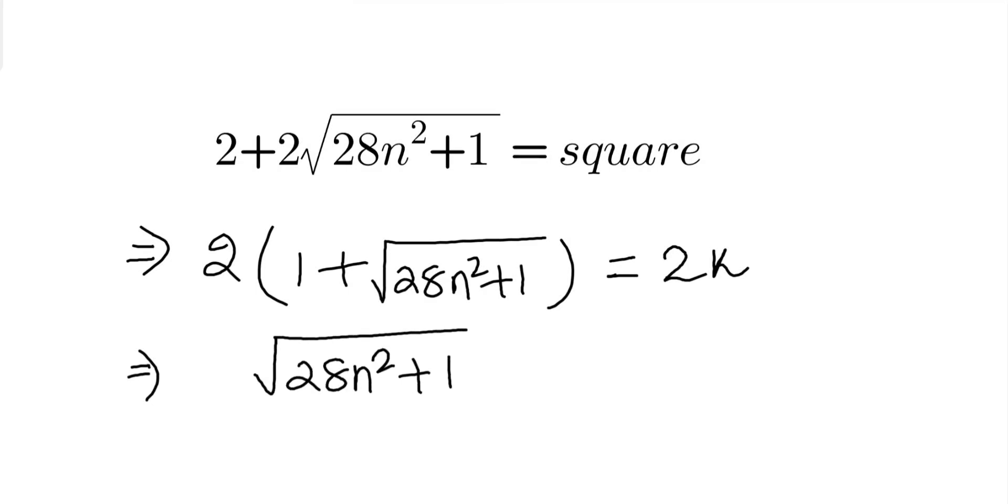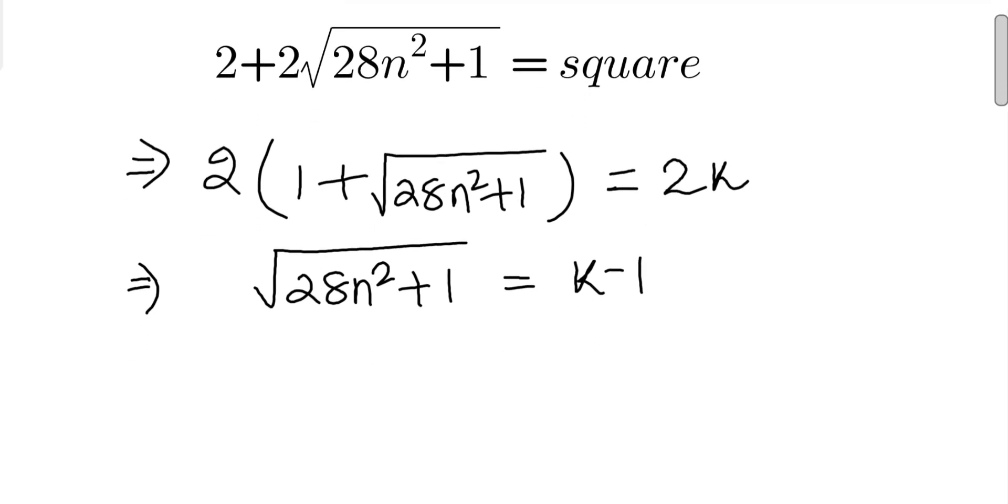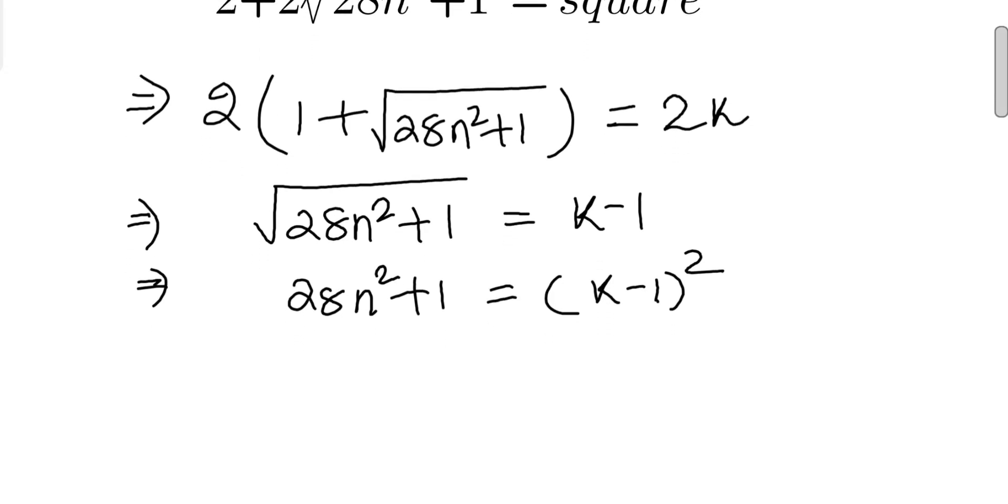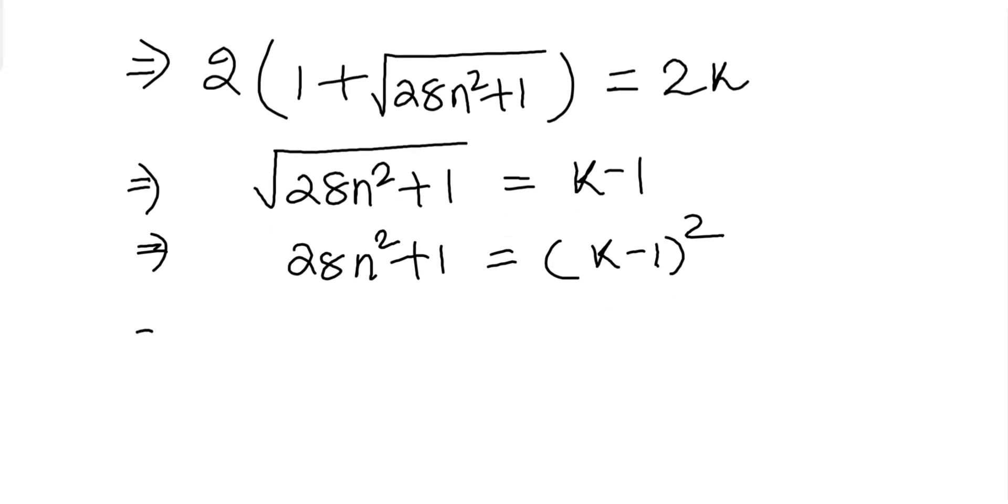√(28n² + 1) = k - 1 and 28n² + 1 = (k - 1)². Simplifying gives me 28n² + 1 = k² + 1 - 2k.